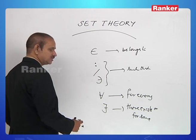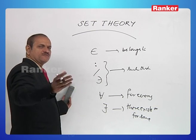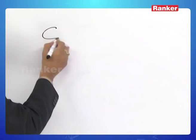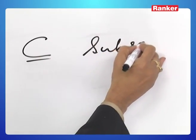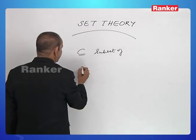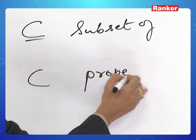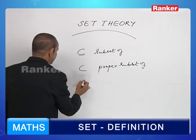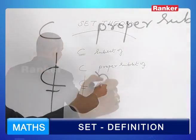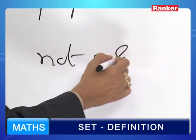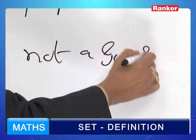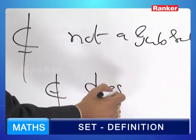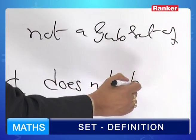There are some more symbols which are, of course, very familiar to us. Let us recall them. '⊆' means subset of. '⊂' means proper subset of. '⊄' means not a subset of. '∉' means does not belong to.